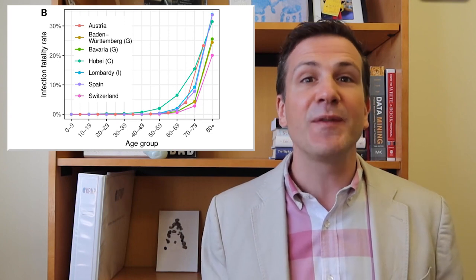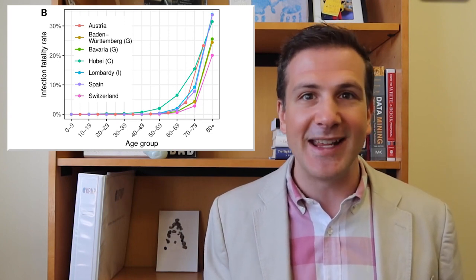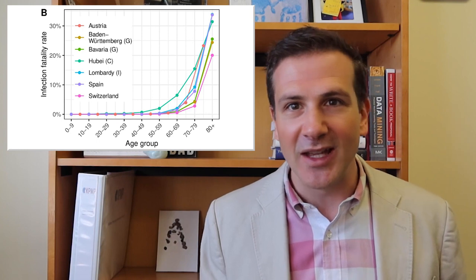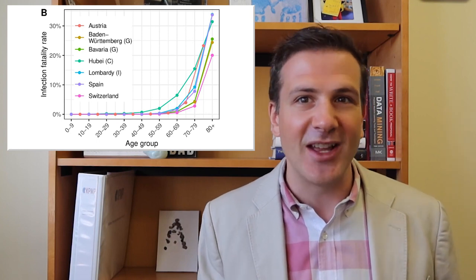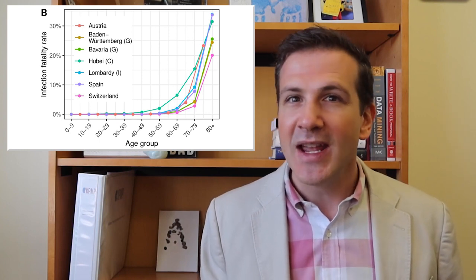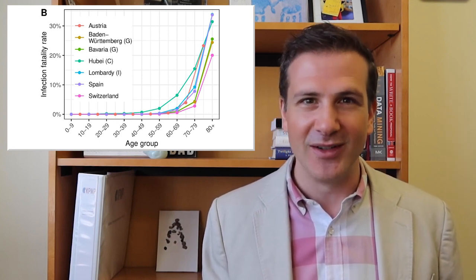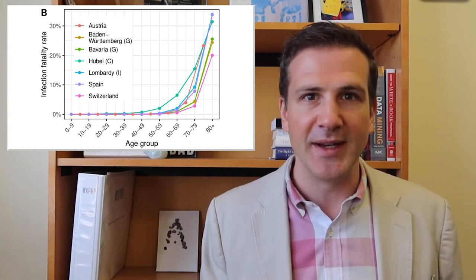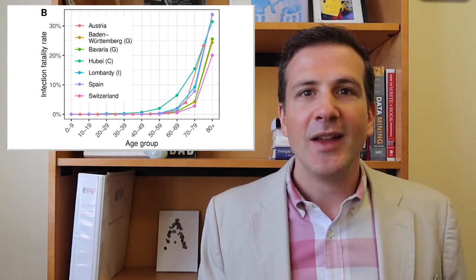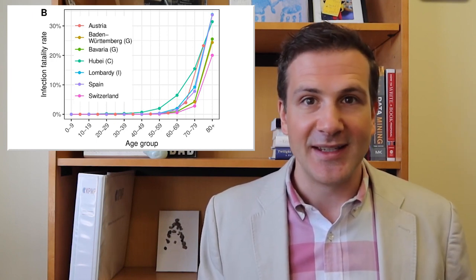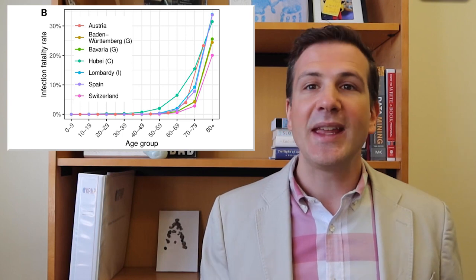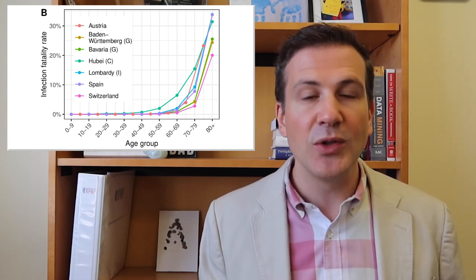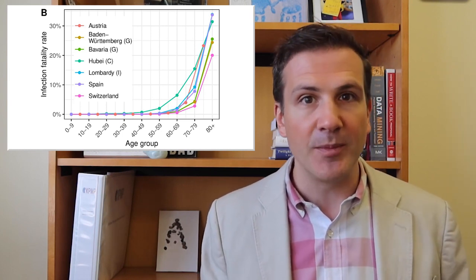In other words, they sort of assume we're capturing most of the COVID-19 cases in elderly people already — so the infection fatality rate and the case fatality rate are pretty close. I'm not sure this assumption is totally valid, but it is what it is. The authors didn't look at U.S. data in this study, unfortunately — so I can't tell you how we stack up against the rest of the world using this better metric.